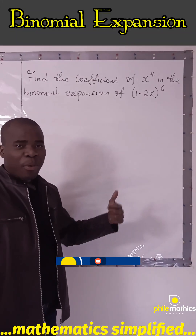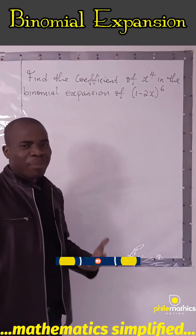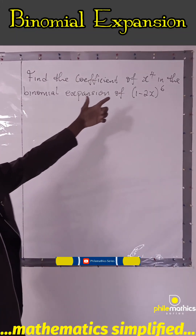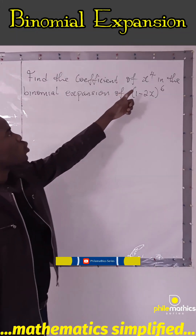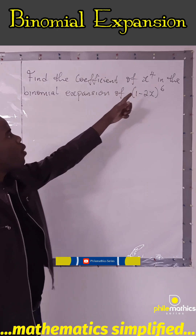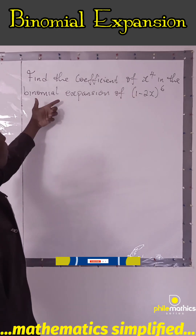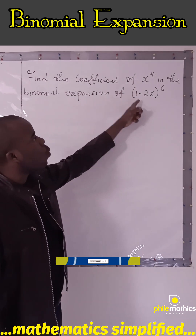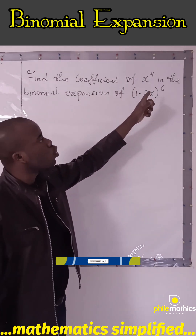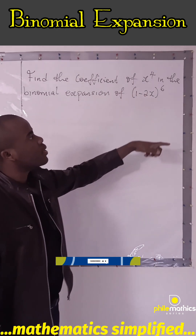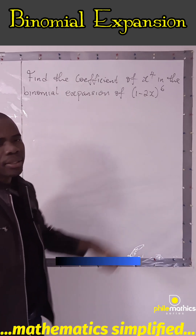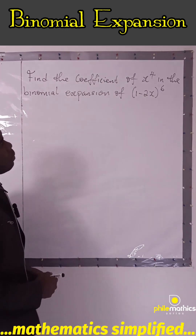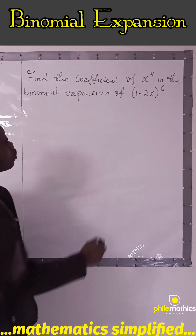This is a problem under binomial expansion. It says: find the coefficient of x to the power 4 in the binomial expansion of (1 minus 2x) to the power 6. We can use the binomial expansion formula.